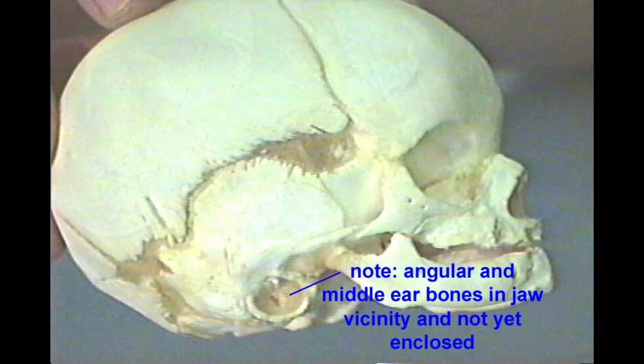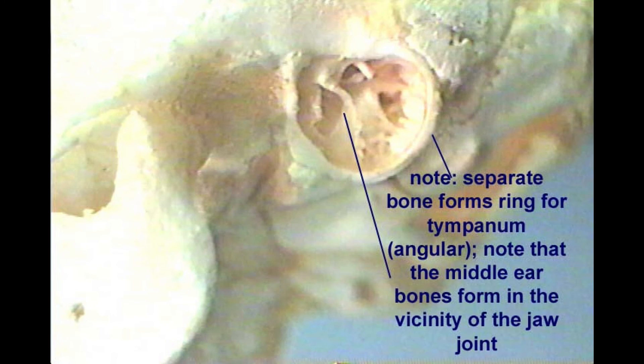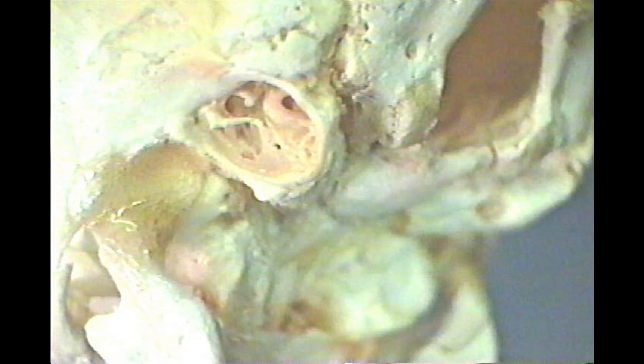In human fetuses, these bones form in the vicinity of the jaw and are incorporated into the middle ear.